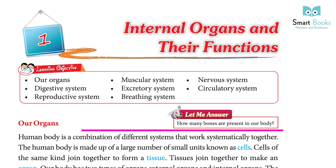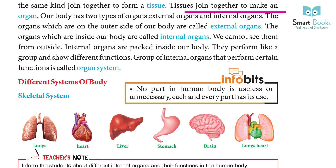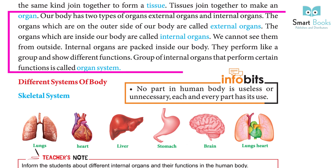The human body is a combination of different systems that work systematically together. The human body is made up of a large number of small units known as cells. Cells of the same kind join together to form a tissue. Tissues join together to make an organ.